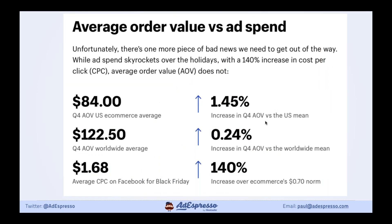Here's another graphic hammering this point home. The average cost-per-click on Black Friday is 140% of baseline — going from $0.70 to $1.68. Also, the average order value — the amount people are spending in their basket — only goes up by 1.5%. So it's costing a lot more to drive people to the site, but when they get there they're not actually spending more. That's the bad news.